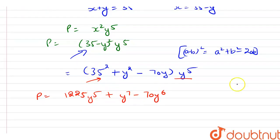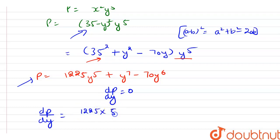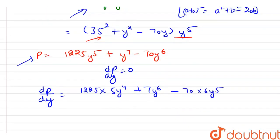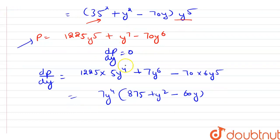Now for the product to be maximum, dP/dy must be equal to 0. So we have to differentiate this value of P with respect to y. Here we have dP/dy equal to 1225 into 5 into y raised to power 4, plus 7 into y raised to power 6, minus 70 into 6 into y raised to power 5. Now here we will take 7y raised to power 4 common, giving us 7y⁴ into (875 plus y squared minus 60y).